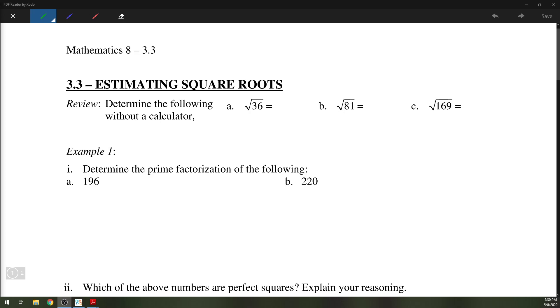You should know that the square root of 36 is 6, square root of 81 is 9, and the square root of 169 is 13. So up to 15 is the ones that you want to know, from 1, 4, 9, and so forth all the way up to 225.